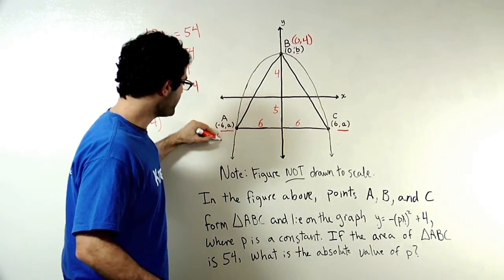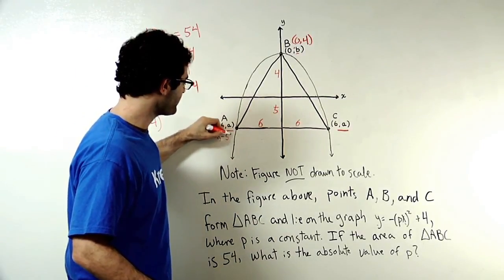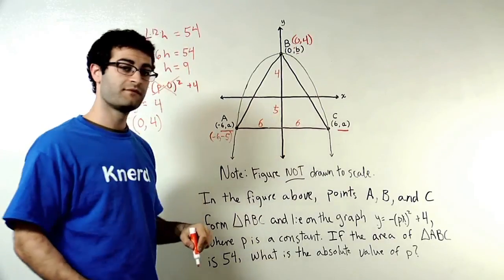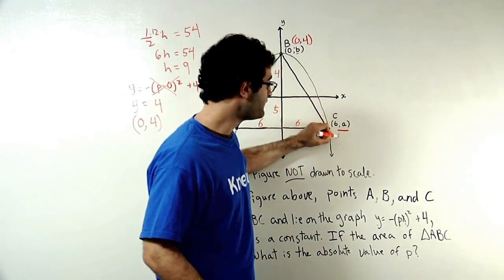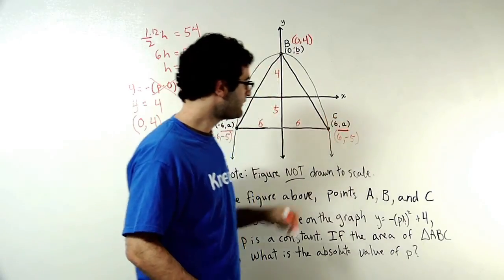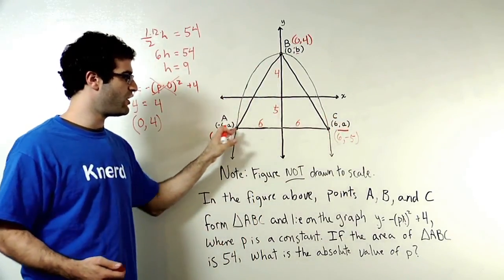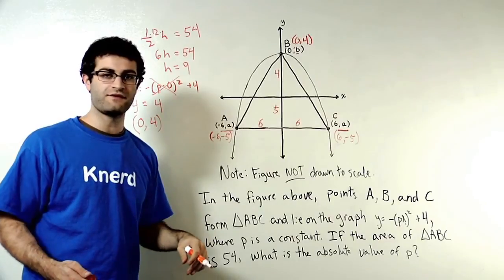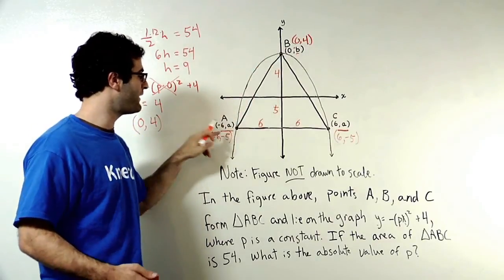So instead of negative six A, I call it negative six, negative five. And instead of here, I can call this six comma negative five. So now I've got all sorts of information. I know how large the triangle is and all these different dimensions. I know what B is. I know what A is.